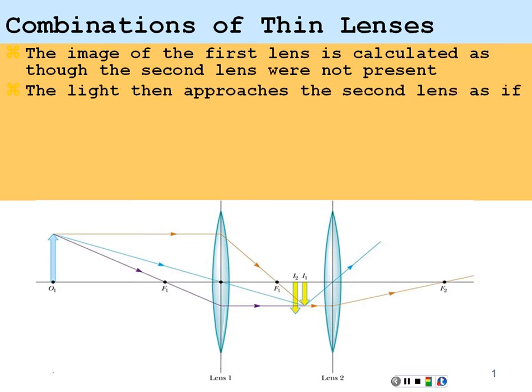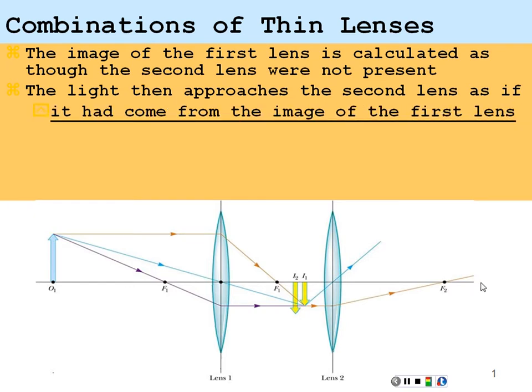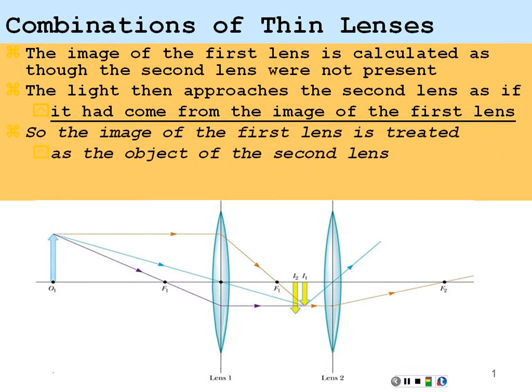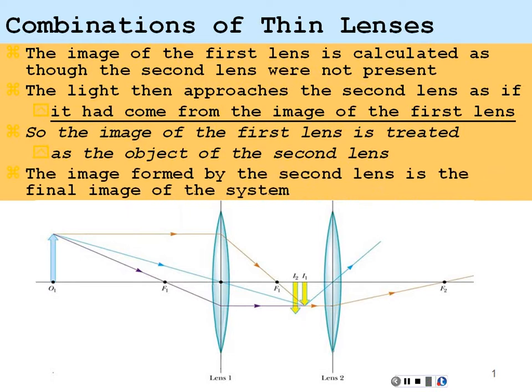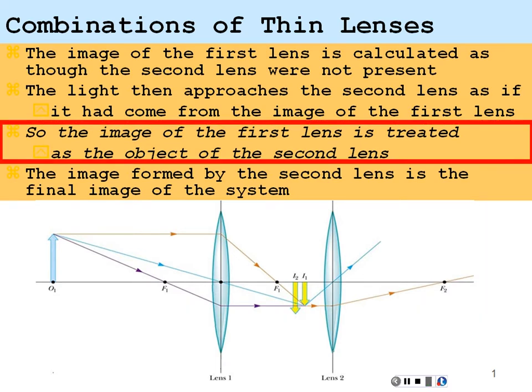So the image of the first lens is calculated as though the second lens were not present. And then the light will approach the second lens as if the object is the image of the first lens. So the image of the first lens is treated as the object of the second lens. And then we get our final image of the system from the second lens. That's our approach. So it's really just a straightforward approach, dealing with two lenses separately and then superimposing the result together.